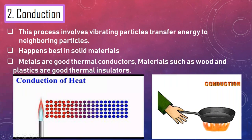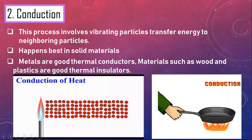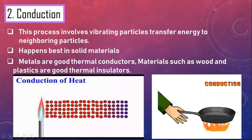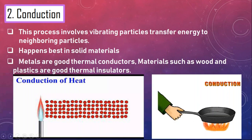When you heat one end of a metal, the vibration spreads through the whole metal. The particles located over the heat source start to vibrate, and while vibrating, they cause neighboring particles to vibrate as well. The vibrating particles transfer energy to their neighboring particles, and those transfer energy to their neighbors. This process continues until the whole object is warmed up.